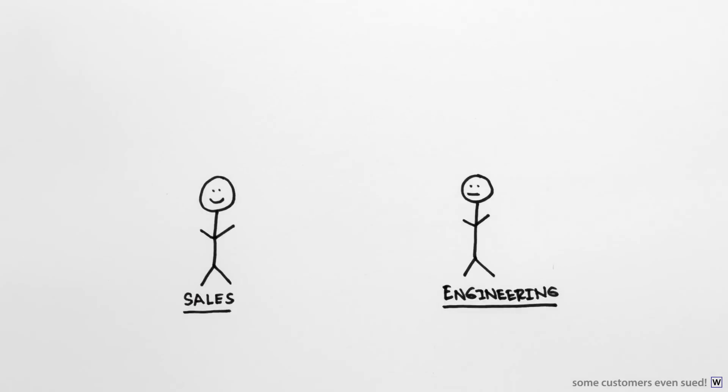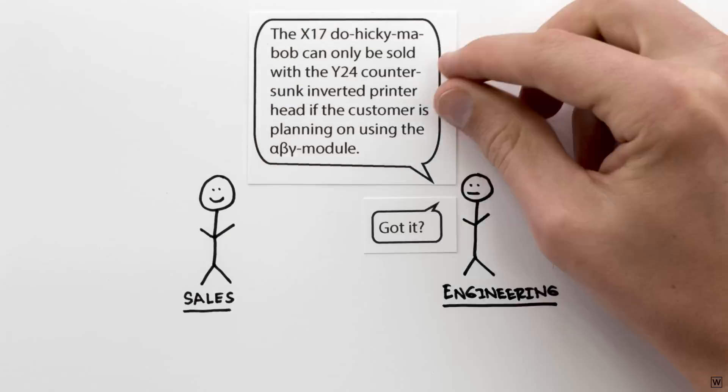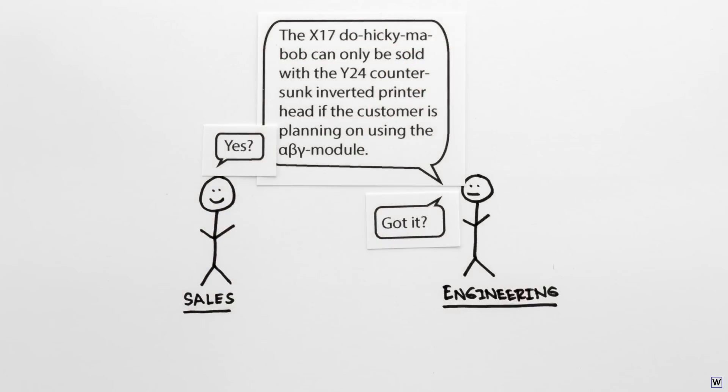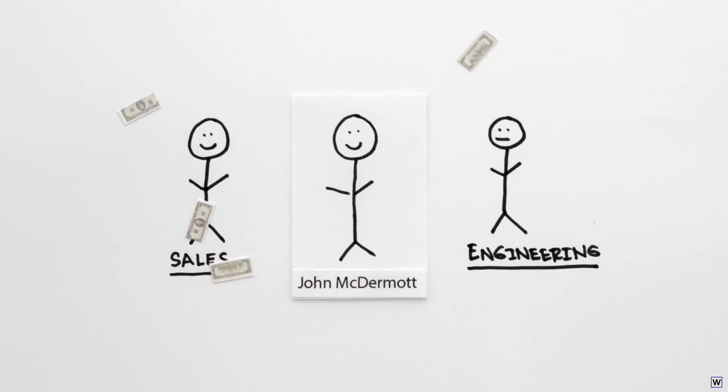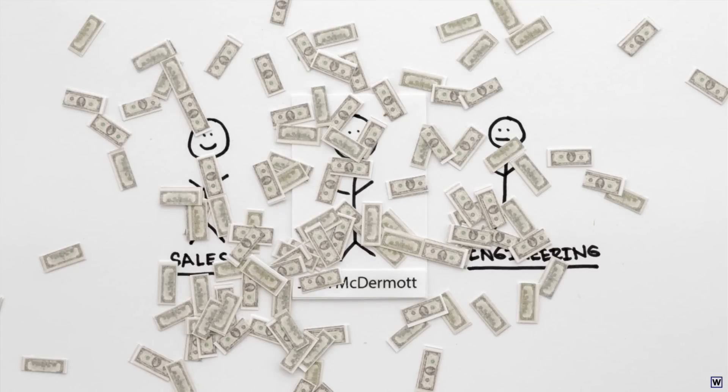When training salespeople to help customers arrive at valid configurations proved challenging, DEC turned to Carnegie Mellon professor John McDermott for help. McDermott built and delivered a system that dramatically and effectively solved DEC's problem, and that five years later would be saving DEC $40 million a year.